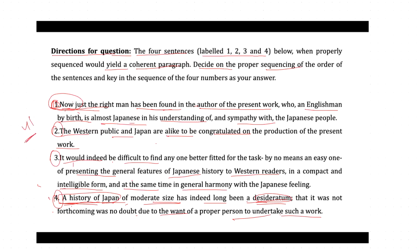After establishing that the right man for the job has been found, sentence three extends this by stating it would indeed be difficult to find anyone better fitted for the task — by no means an easy one — of presenting the features of Japanese history. So sentence four introduces the need, sentence one states the right man is found, and sentence three confirms that no one else would be better suited for the task than the person the author found.